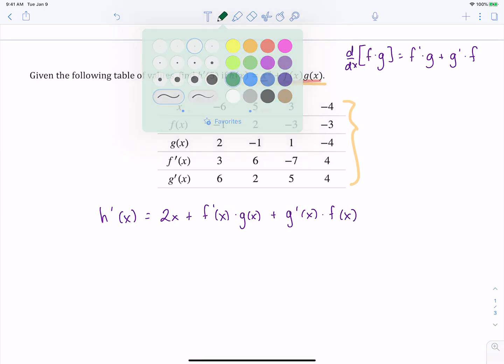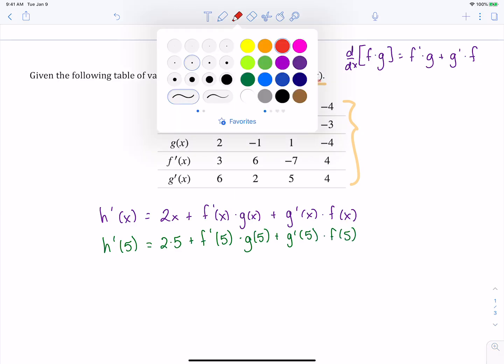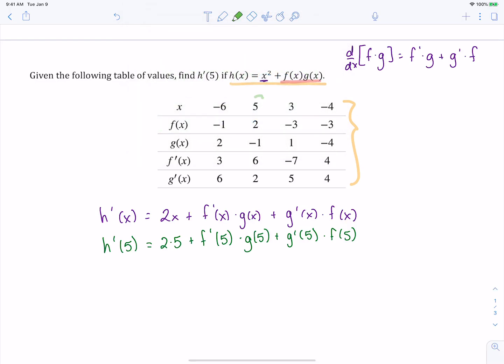So we in particular are being asked about what is the derivative of this function at 5. So we need to plug in 5 for all of our x's. So we have 2 times 5 plus f'(5) times g(5), plus g'(5) times f(5). So what we need to look at in our table here is this middle column, because that is when x is 5, and that's going to give us all our outputs for our functions and our derivatives at 5. So this is where all of these values are coming from.